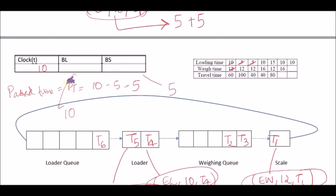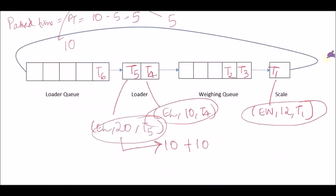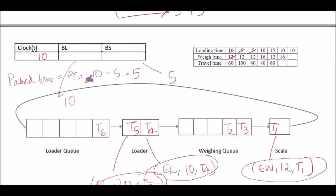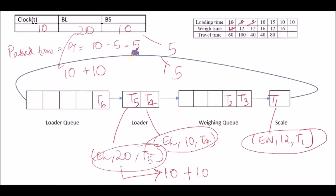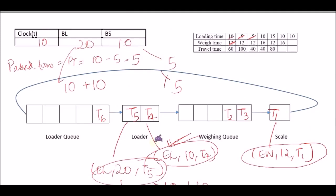Since it's cumulative, BL is going to be 10 — because there were two loaders and the elapsed time was 5, giving 5×2=10. Adding to the previous values: BL becomes 10+10=20 and BS becomes 5+5=10. The next imminent event is also at time 10, which doesn't matter — these are considered two simultaneous events. We're just going to write it as two different sets.